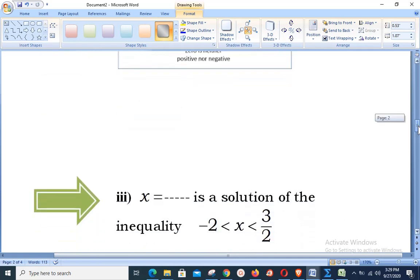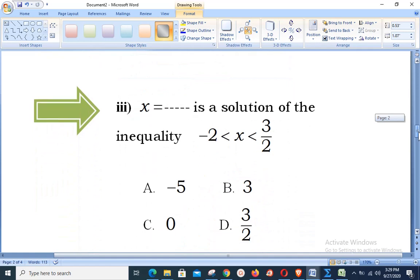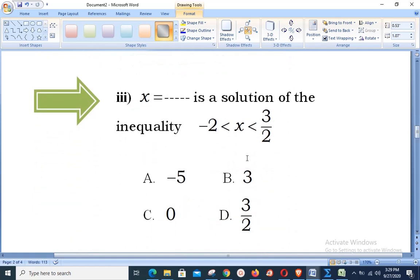Third number objective: the statement says x is a solution of the inequality minus 2 less than x less than 3 by 2. If we put the values on the number line, 3 over 2 means 1.5, so the correct answer will be 0 only according to this given condition.